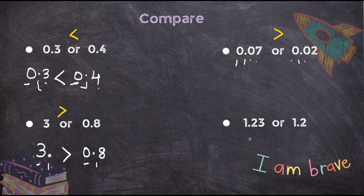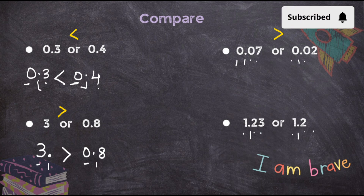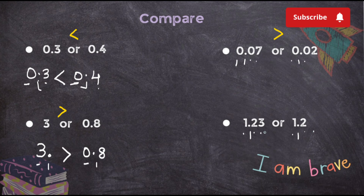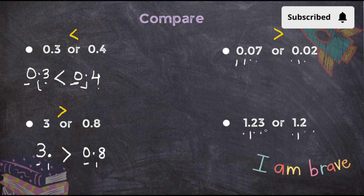The last question: compare 1.23 and 1.2. As I said, always start with the decimal point. Find the decimals on both. Start from the left-hand side: here it is 1 and here it is 1 — cannot compare, same. Here it is 2 and here it is 2 — cannot compare. Now here it is 3 and here there is nothing. When there is nothing, there is nothing to compare, so definitely 3 makes it bigger. Between 1.23 and 1.2, the number 1.23 is greater.